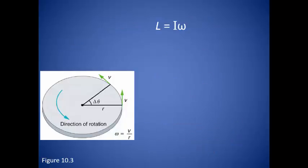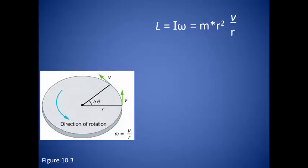We can relate this to both linear momentum and the change in momentum. Since this is just some object moving in a circle, the moment of inertia is mass times the radius squared. Then recall that the velocity can be found by multiplying omega and radius. It works out that the angular momentum is equal to the mass times the tangential velocity times the radius. Since linear momentum is defined as mass times velocity, we can substitute linear momentum into our expression. This means we can determine angular momentum from linear measurements, if that's the information we have.